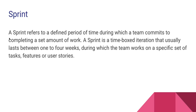Next, let's understand what a sprint is. A sprint refers to a definite period of time during which a team commits to complete a set amount of work. Once your story is in your backlog, you decide that in sprint A or sprint B - from a two-week or three-week duration - you are going to complete certain tasks. That is what we call the sprint. A sprint is a time-boxed iteration that usually lasts between one to four weeks.